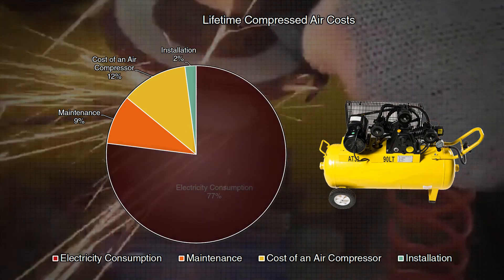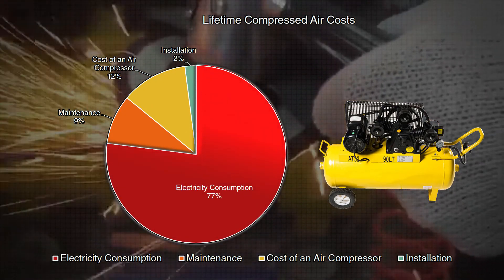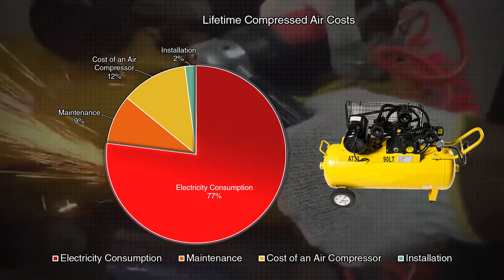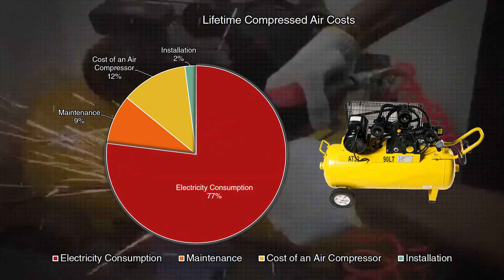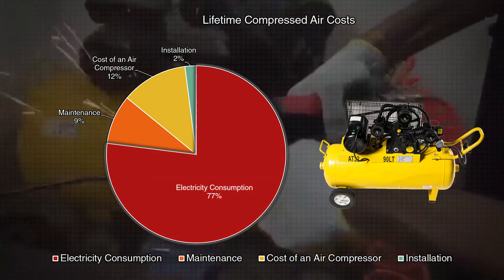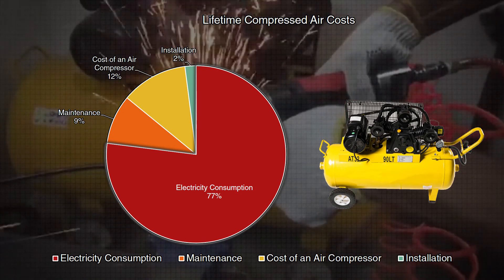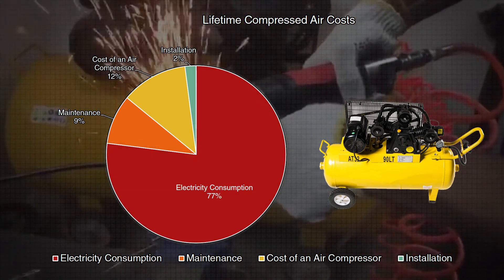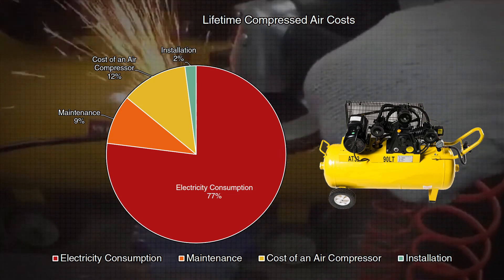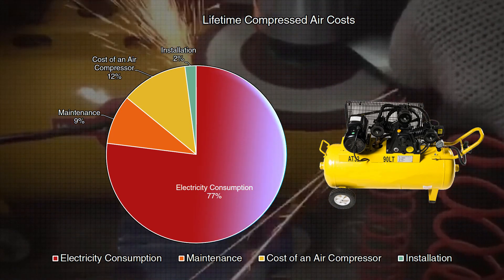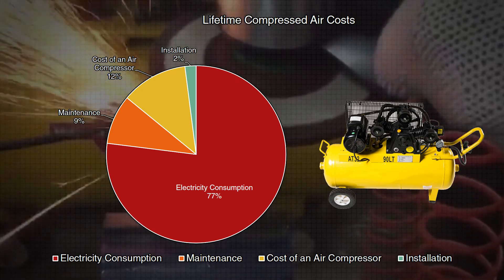The highest cost of air compressor ownership is the power consumption over its lifetime, which far exceeds all other costs, with the distant second highest cost being the maintenance and the labor required to ensure consistent performance and operation. By improving the operating efficiency of air compressor operation, there is a significant cost savings over time.